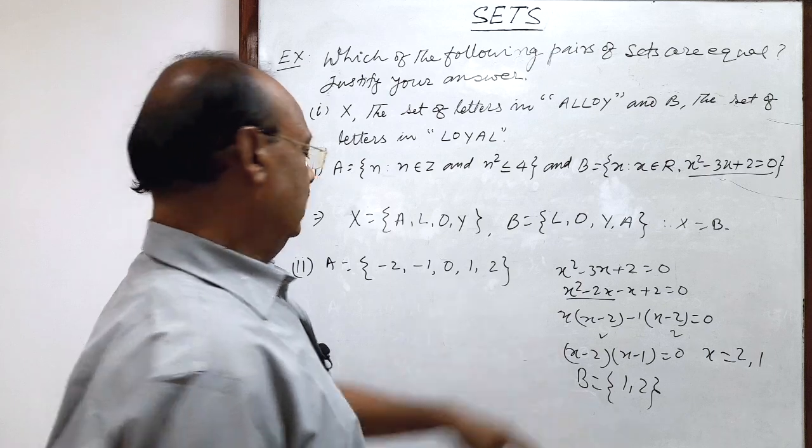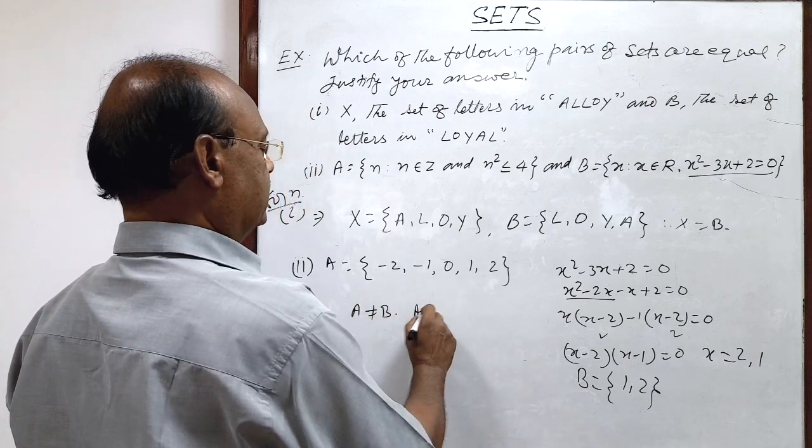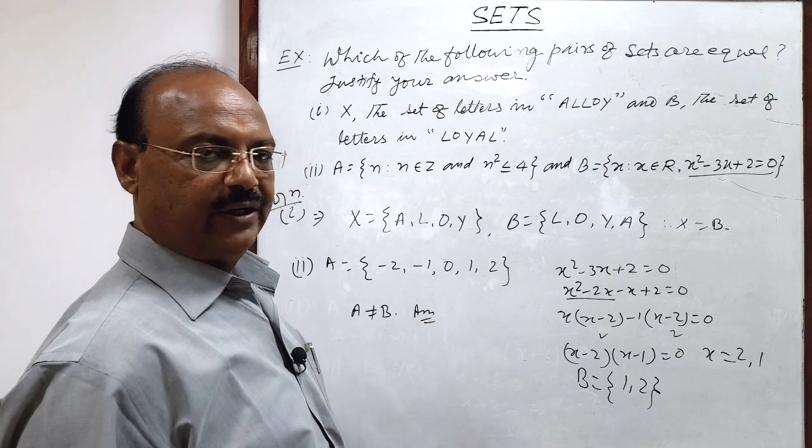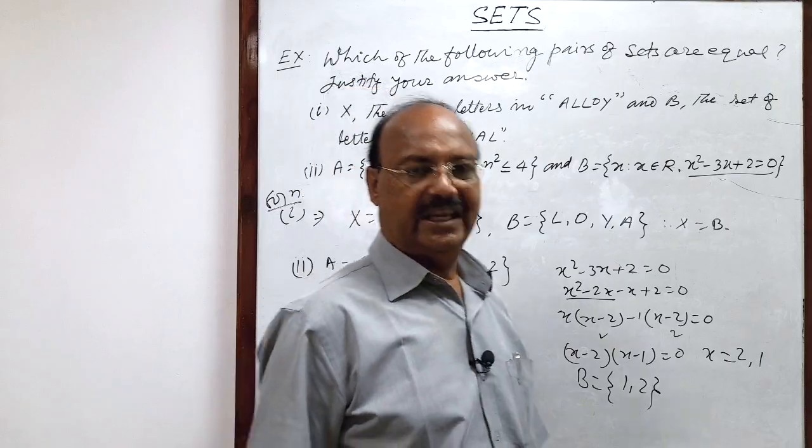So A is not equal to B. This is the answer of the second part. So hope you have understood it. We will see some more questions in other videos. Thank you.